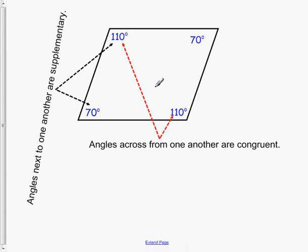And the angles across from one another are congruent. So these are the same as are the 70 and 70. So that's something special about the angles.